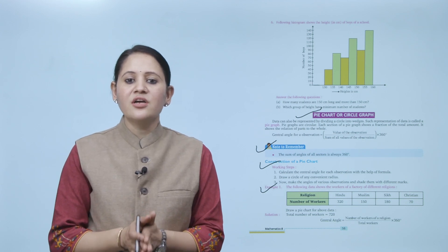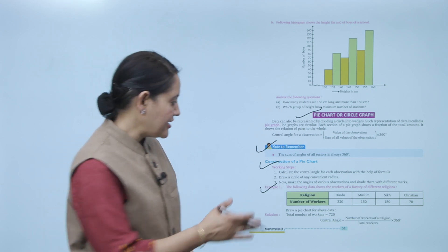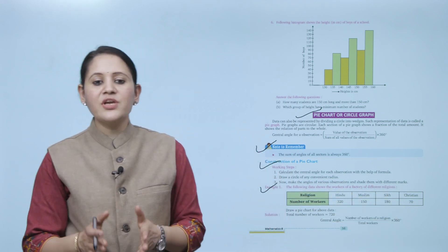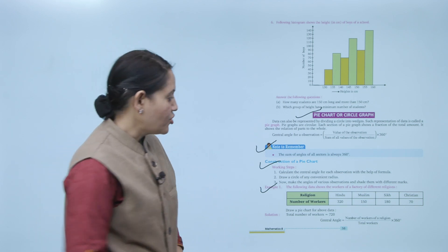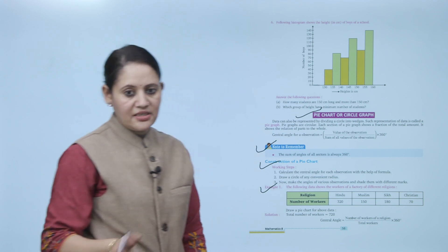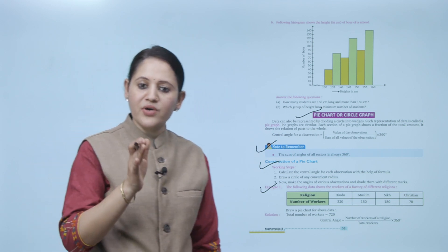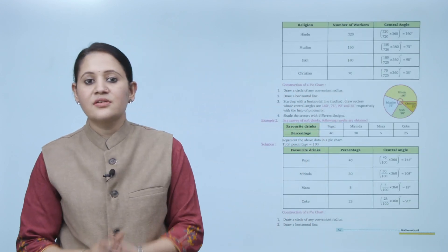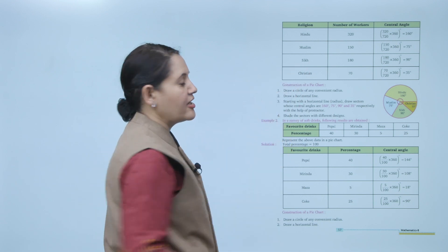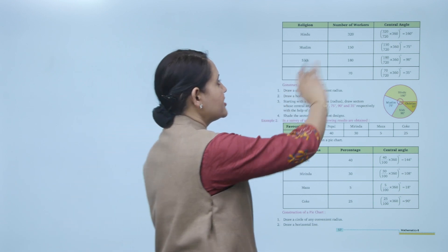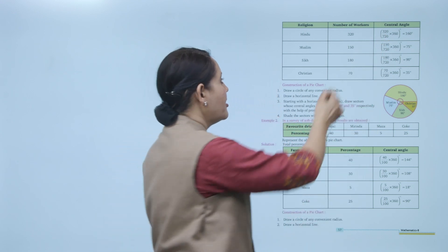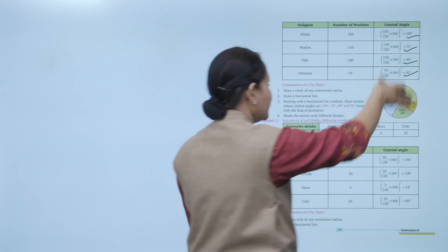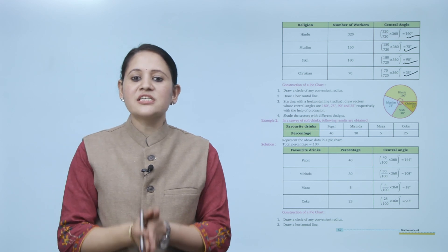Example: data shows workers of a factory by religion — Hindu: 320, Muslim: 150, Sikh: 180, Christian: 70. Total workers = 720. Central angle = (number of workers in religion / total workers) × 360°. So: Hindu = 320/720 × 360 = 160°, Muslim = 75°, Sikh = 90°, Christian = 35°.